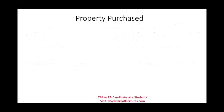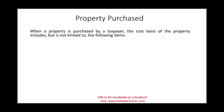Now let's look at property purchased — you went to a business, purchased property, and paid for it. When a property is purchased by a taxpayer, the cost basis includes but is not limited to: the purchase price, which is usually the largest component; shipping costs, because you don't have the asset ready for its intended use without paying for shipment.